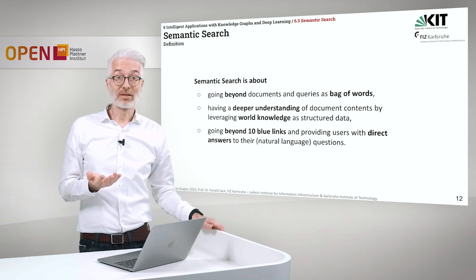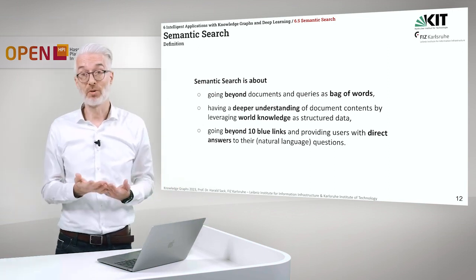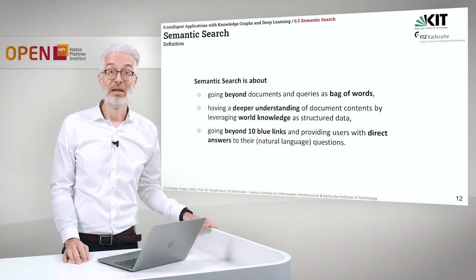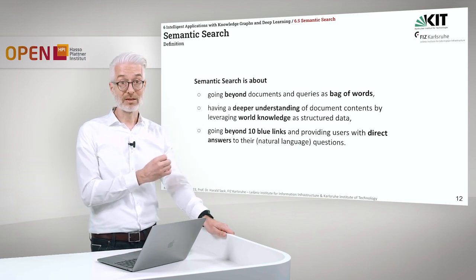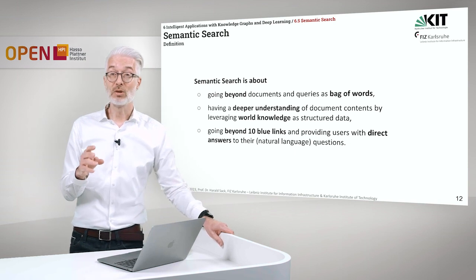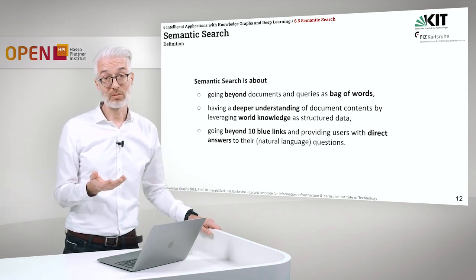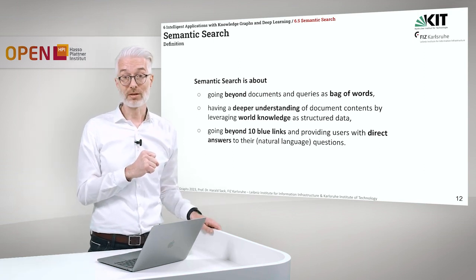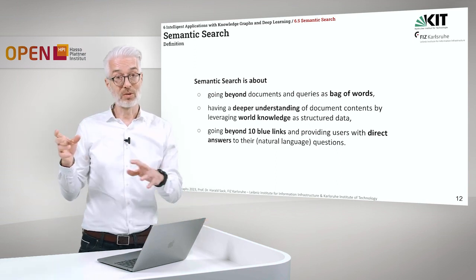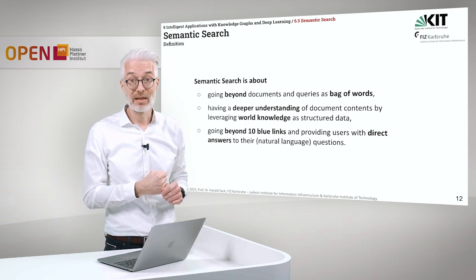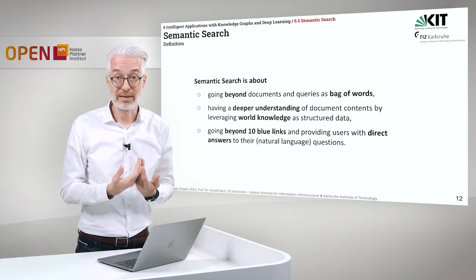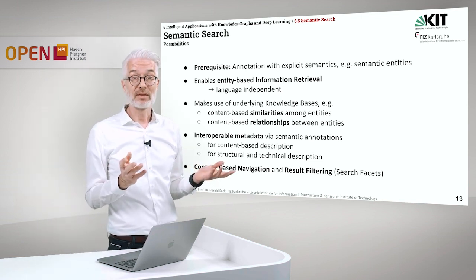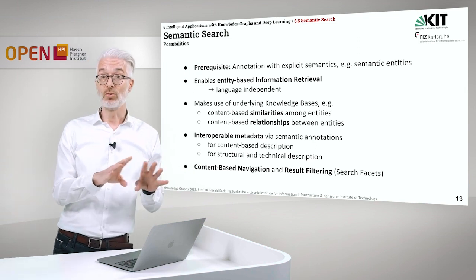What is semantic search? Semantic search is about going beyond documents and queries as bag of words. We do not treat documents as a bag of words — the sequence of words still matters and especially the meaning of the words matters. Semantic search has a deeper understanding of document contents by leveraging world knowledge as structured data. So we are using external sources like encyclopedias on the web, like Wikipedia, we are using Wikidata, we will use DBpedia. And we will go with our answers beyond the ten blue links that you know from Google.